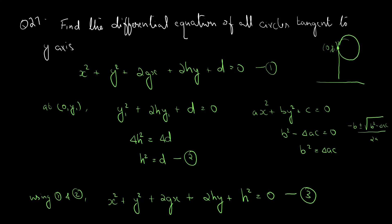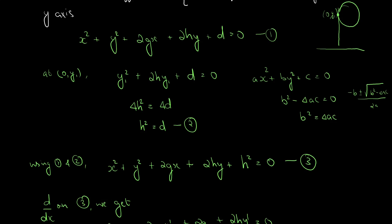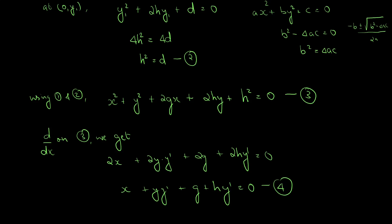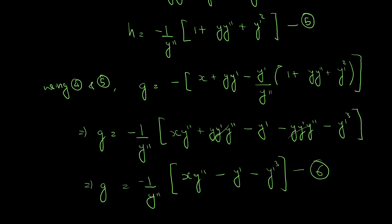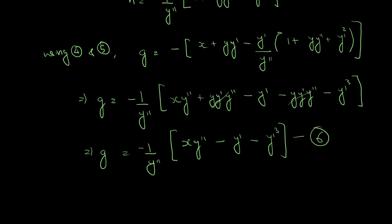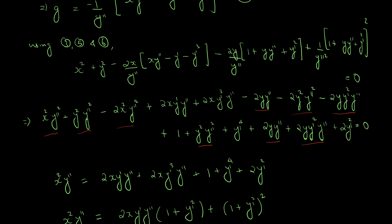To summarize: we first formed the family of curves equation x² + y² + 2gx + 2hy + h² = 0, representing all circles with the y-axis as tangent. It had two arbitrary constants g and h, which we eliminated by differentiating twice and substituting. This gives the required second-order differential equation.